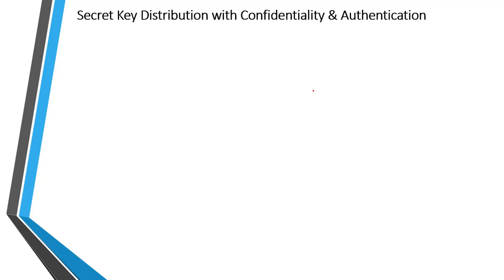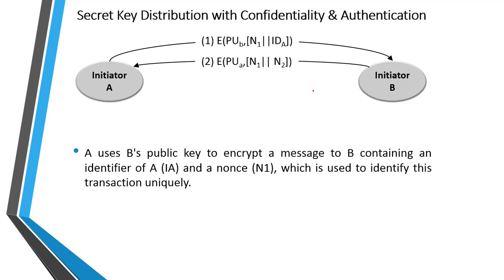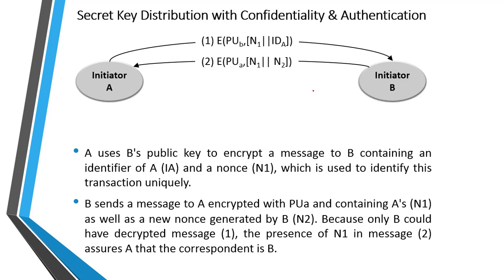Next is symmetric secret key distribution with confidentiality and authentication. In the previous method, a man-in-the-middle attack is possible, so this method is more secure. First, user A uses B's public key to encrypt a message containing an identifier of A and a nonce N1, which uniquely identifies this transaction. In the next step, B sends a message to A encrypted with A's public key, containing A's nonce N1 as well as a new nonce N2 generated by B, since only B could have decrypted the original message. The presence of N1 ensures the correspondent is B.